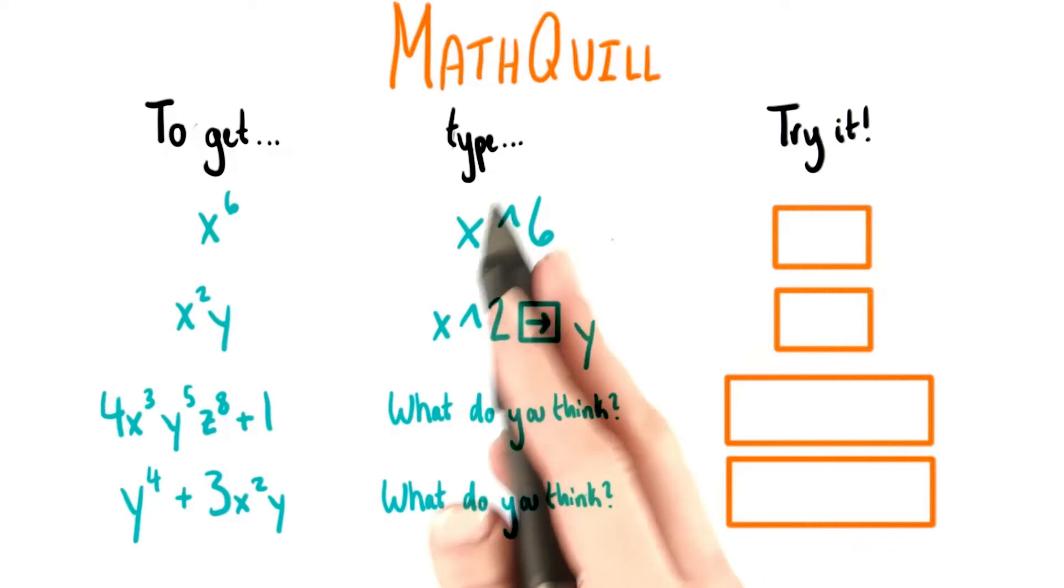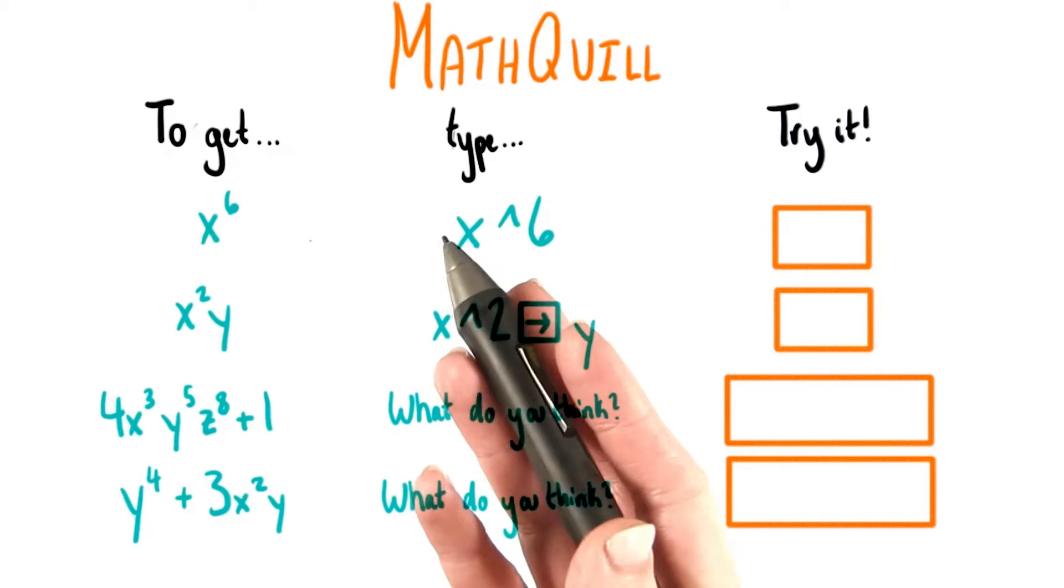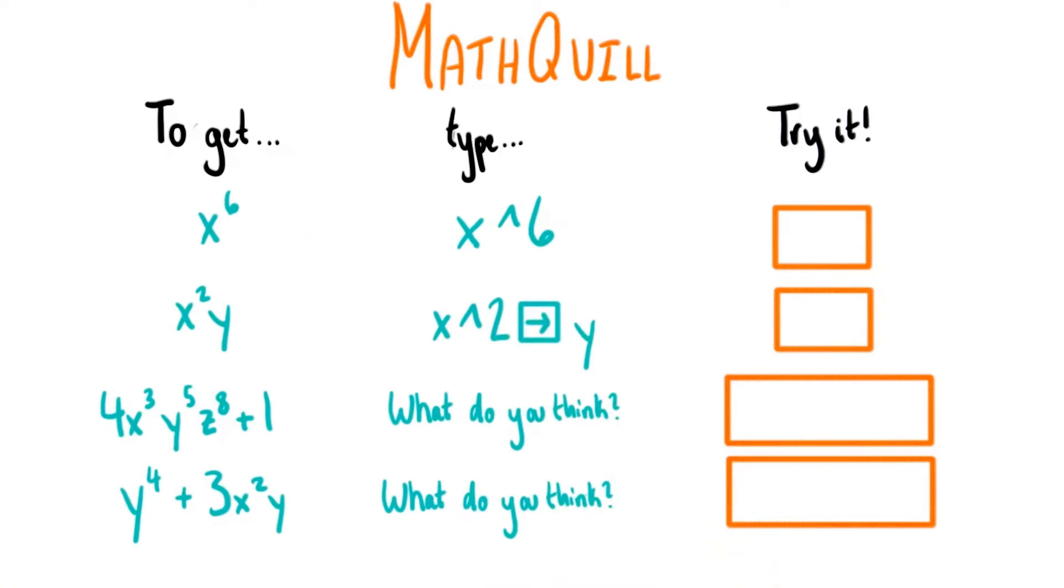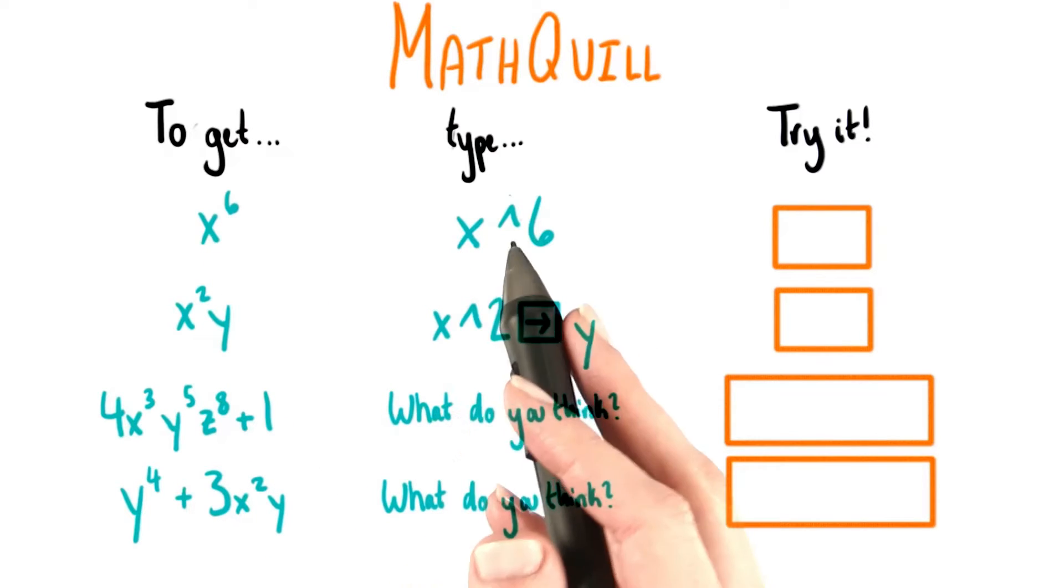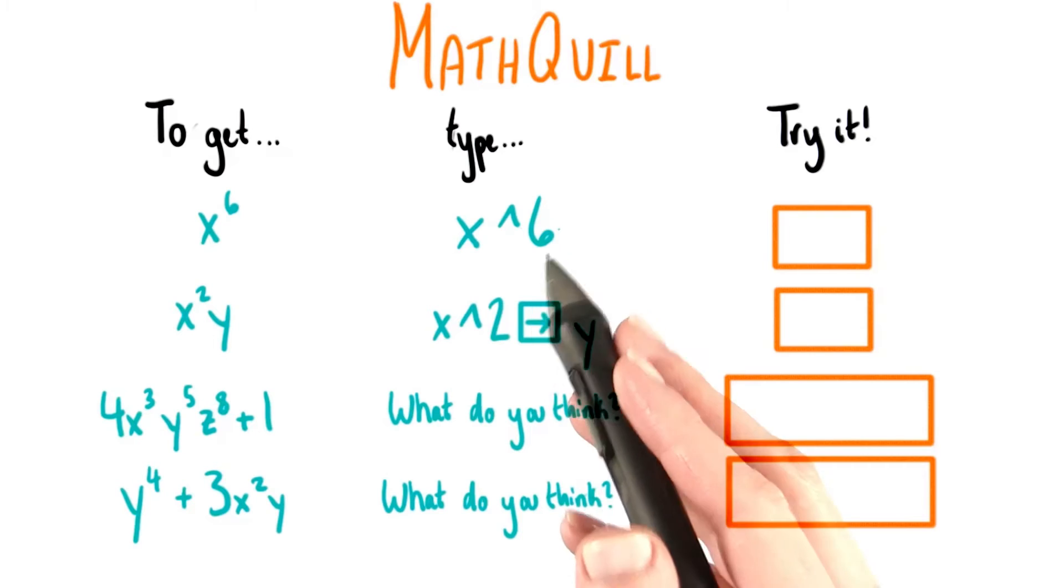This is mostly an issue when it comes to exponents, since there's not an automatic exponent key on a keyboard. So for example, if we want to type x to the 6th, then the keys that you need to hit are x caret 6.